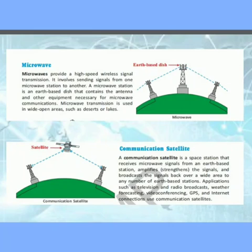Next we will talk about microwave. Microwaves provide a high-speed wireless signal transmission. It involves sending signals from one microwave station to another. A microwave station is an earth-based dish that contains the antenna and other equipment necessary for microwave communications.